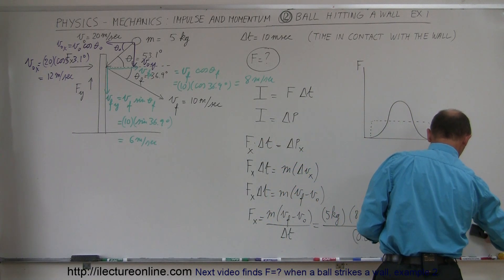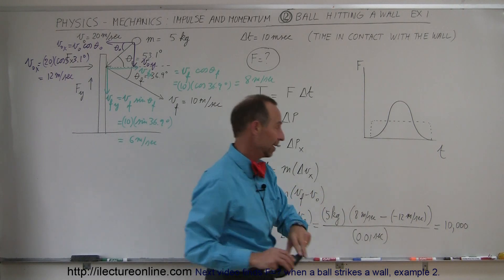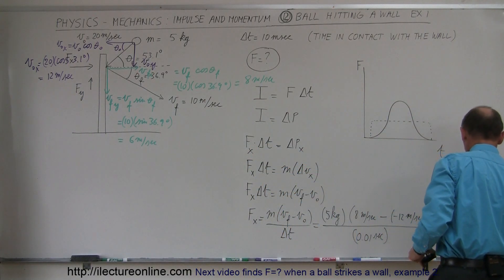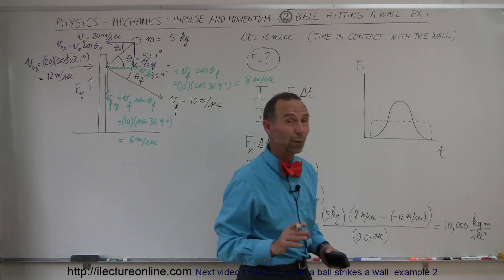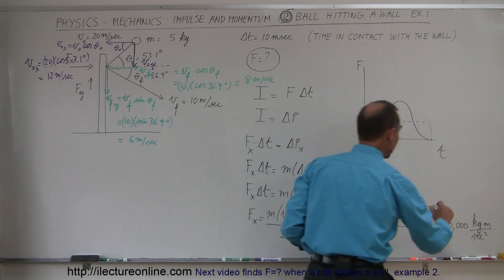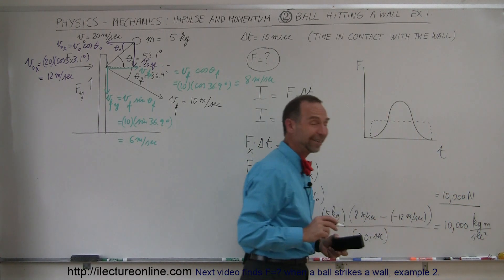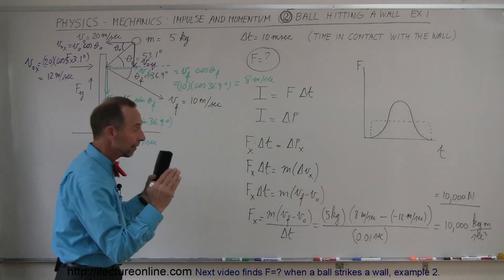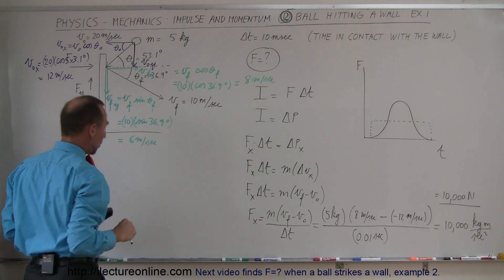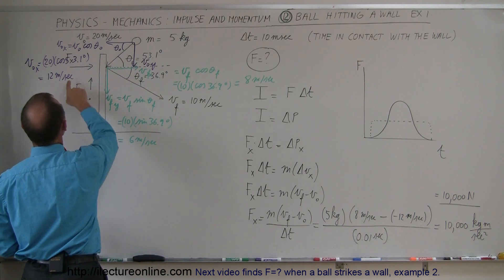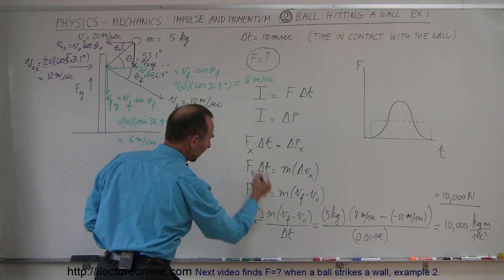The units are kilograms times meters per second divided by seconds, which gives kilogram-meters per second squared — and that equals newtons. So the average force over those 0.01 seconds, which causes the momentum to change in the x-direction, is equal to 10,000 newtons. That's the force in the x-direction. Now we need to do the same for the y-direction.